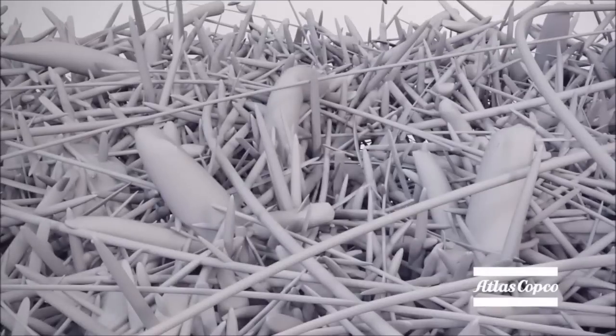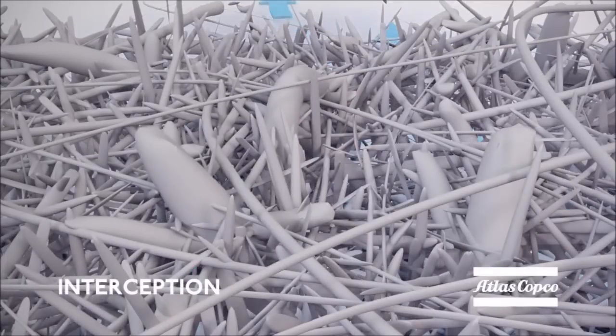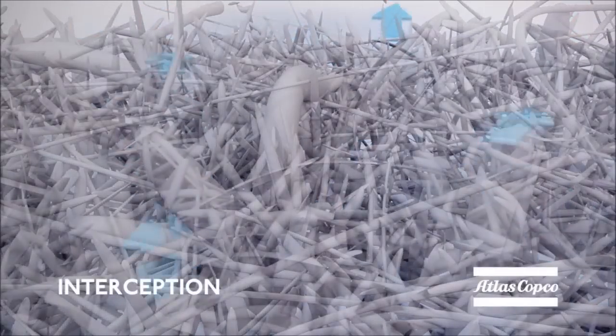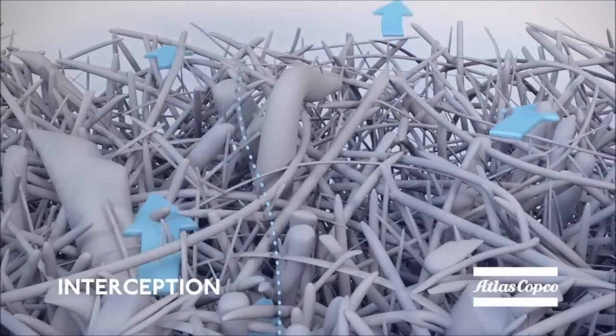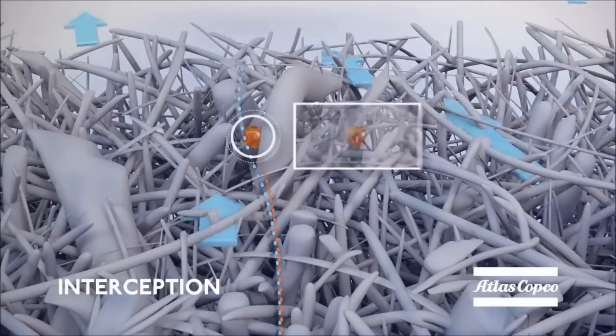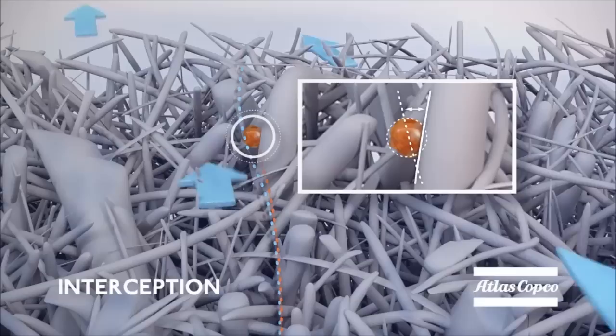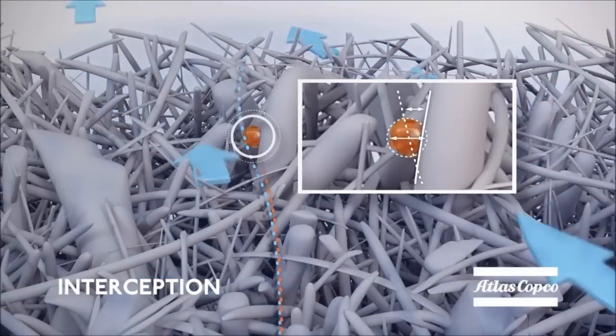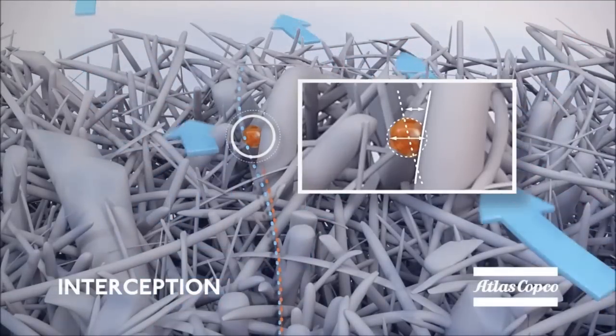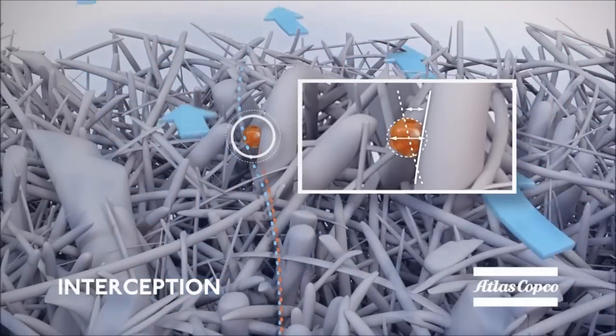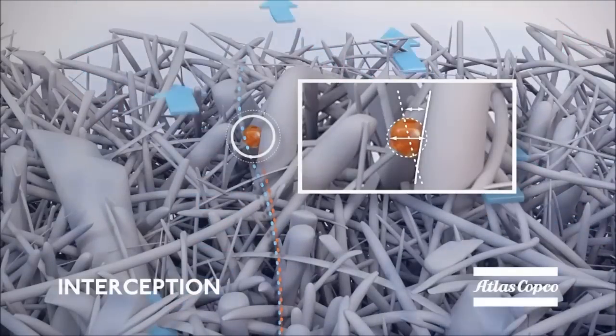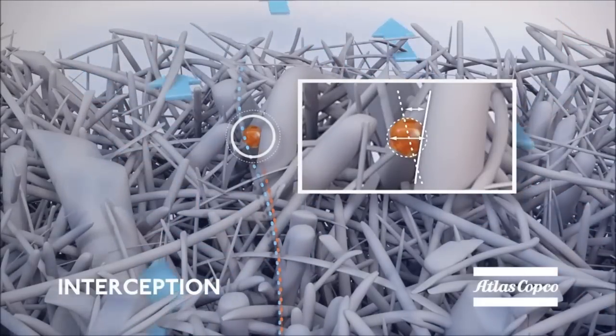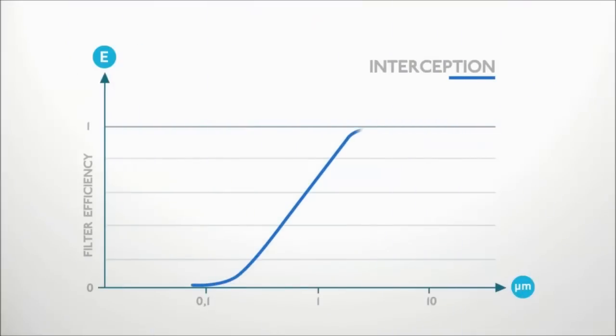The second mechanism is called interception and involves particles of a somewhat smaller size. These are particles that are light enough to follow the streamline. But when the radius of the particle is larger than the distance between the streamline and the edge of the fibre, the particle hits the fibre. It gets stuck there and is thus removed from the air. Interception gains importance with increasing particle size.